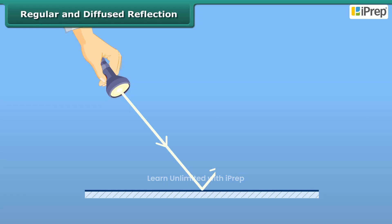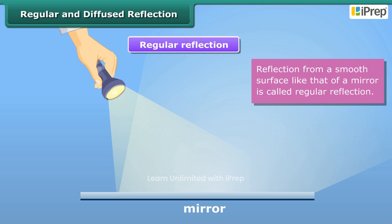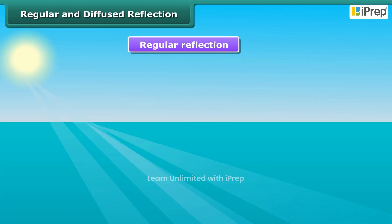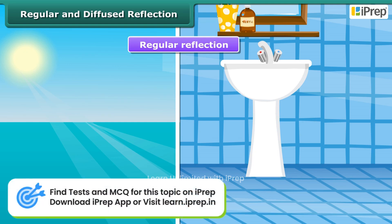We now know that light falling on an object is reflected. Reflection from a smooth surface, like that of a mirror, is called regular reflection. Reflection of light from the water surface and highly polished floors are also examples of regular reflection. Images are formed by the regular reflection of light.